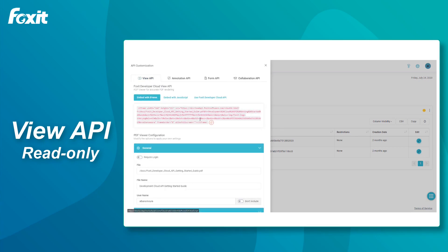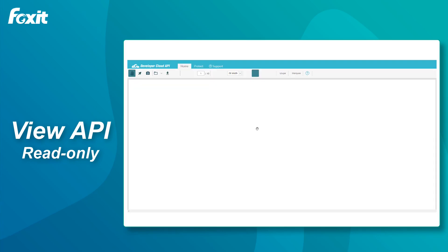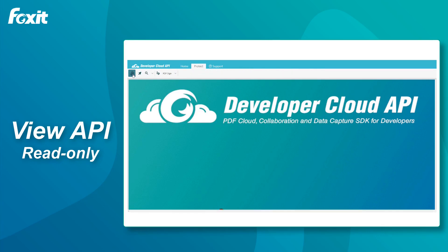First, let's take a look at the Vue API. The Vue API is a read-only PDF viewer. As we open it up, we can see there is only a Home tab, which shows you basic viewing functionalities.